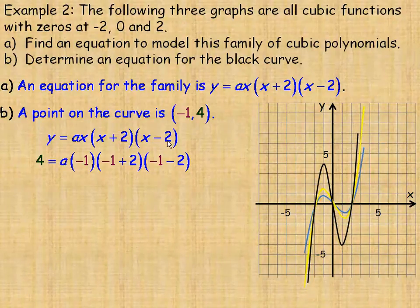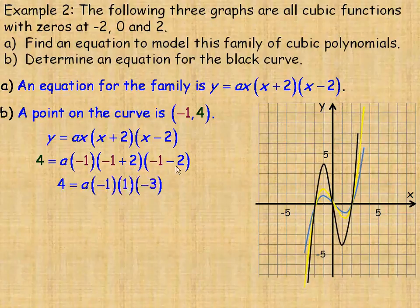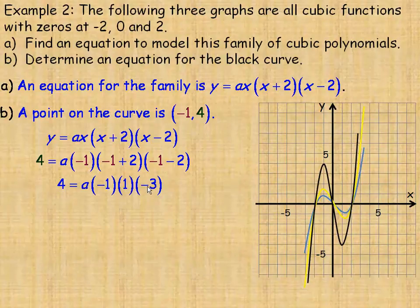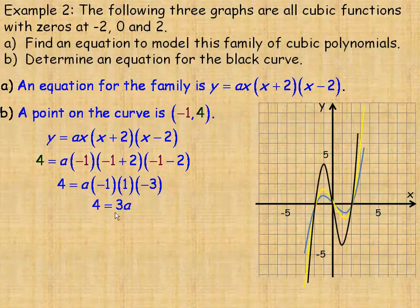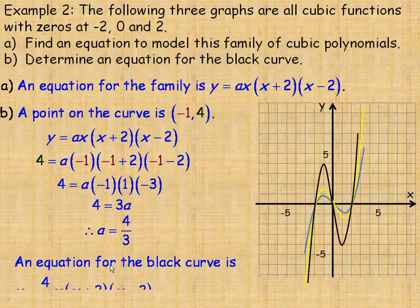Now, solving for a here, negative 1 plus 2, of course, is 1. And negative 1 minus 2 is negative 3. Now, negative 1, 1, and negative 3 multiply to negative 3. So we get 4 equals negative 3a. And then dividing both sides by negative 3, we get 4/3 for our a value, which is also the vertical stretch. So substituting 4/3 in place of a here, we get an equation for the black curve would be y equals 4/3 times x times x plus 2 times x minus 2. That's an equation for that black curve.